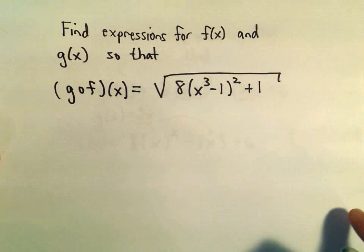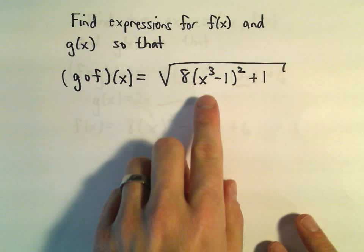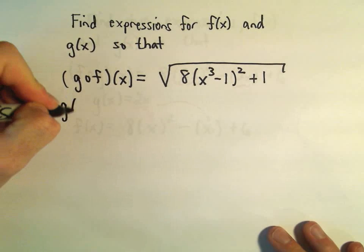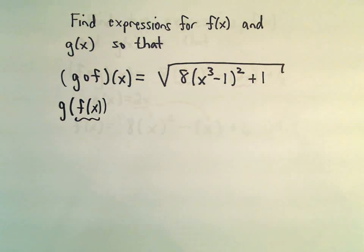Let's see. One more example here. So g composed with f of x equals the square root of 8(x³ - 1)² + 1. Again, not necessarily always unique answers, but here's certainly one that I believe would work. So now we're doing g composed with f of x. So let's be careful. Because f(x) is now going to be kind of playing the role of my inside function.